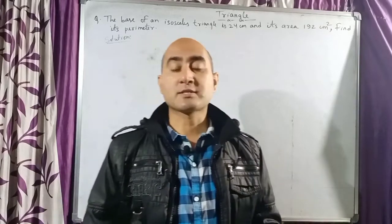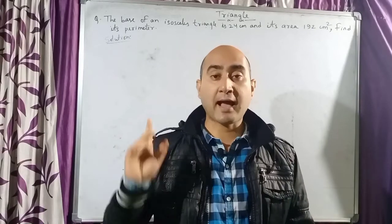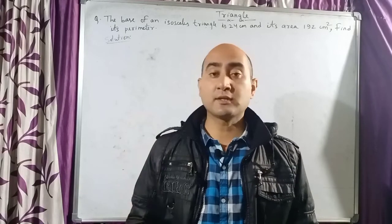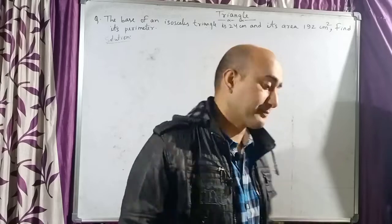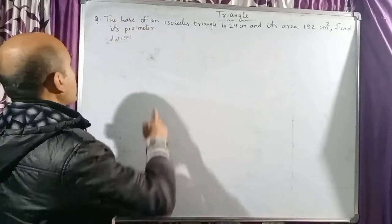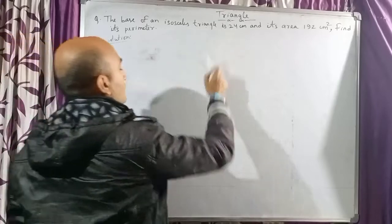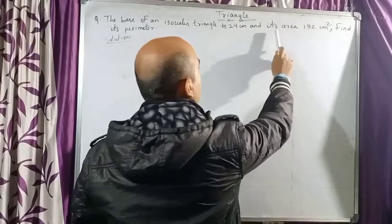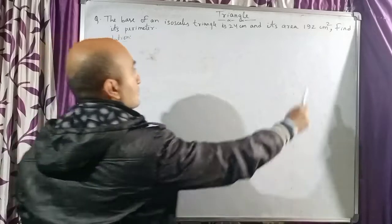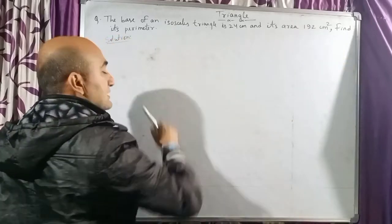Let us do some more questions from the section on isosceles triangles today. I have a question here, children. Let us discuss it. The question says: the base of an isosceles triangle is 24 centimeters and its area is 192 square centimeters. Find its perimeter.